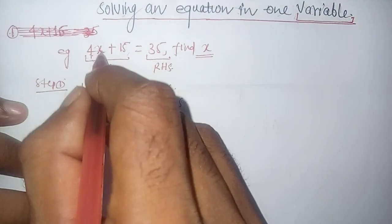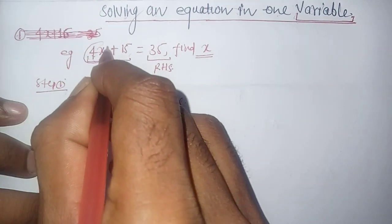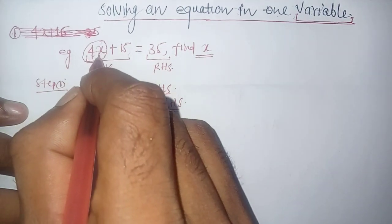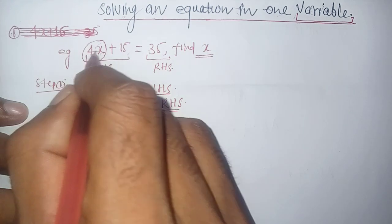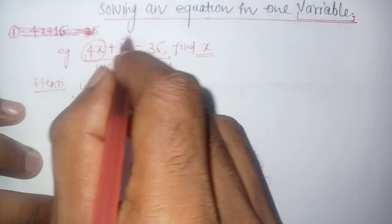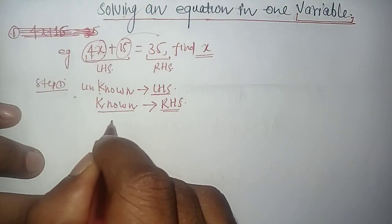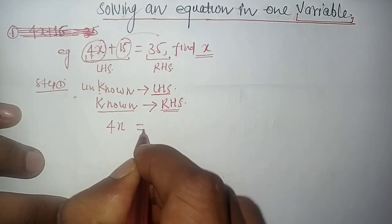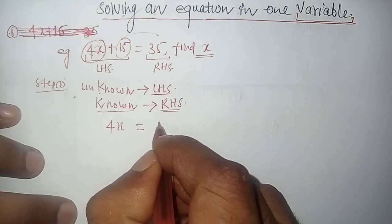To solve this, what is unknown? 4x is unknown. What is known? 15 is constant. So we write 4x equals, and here we already have 35.